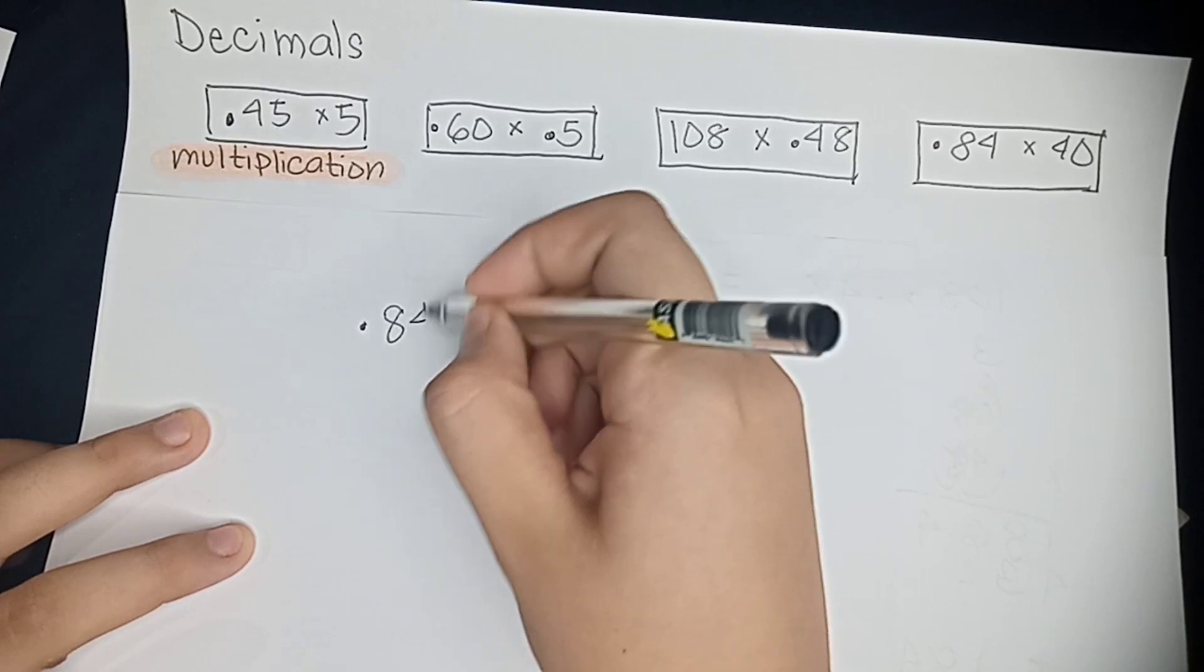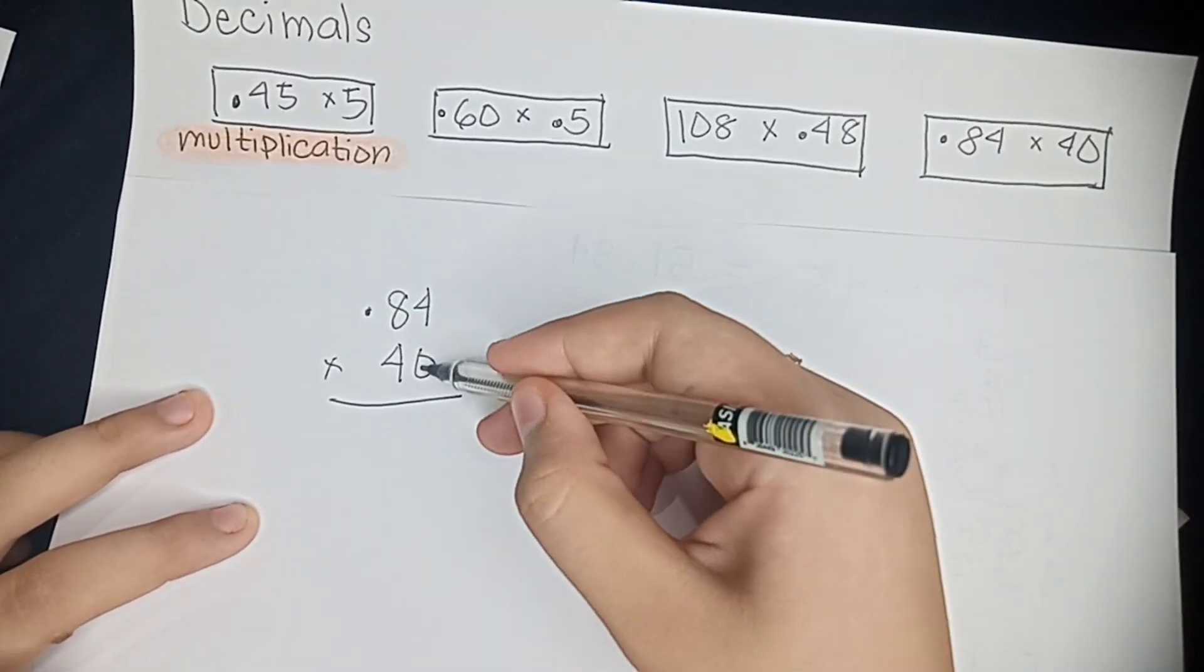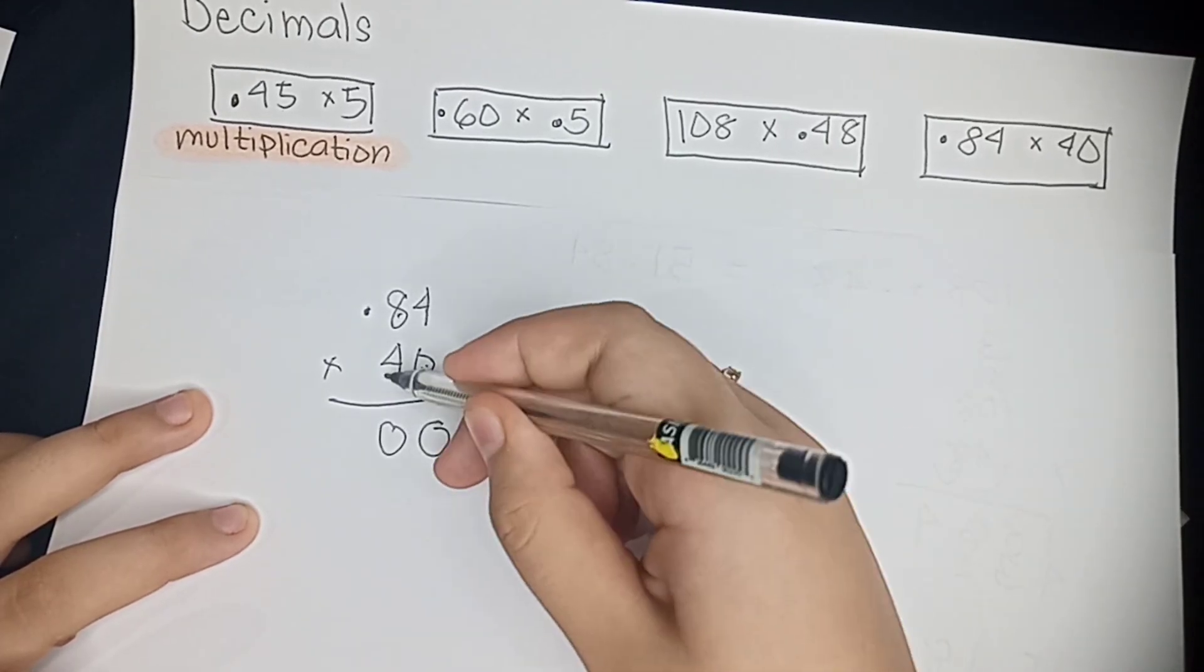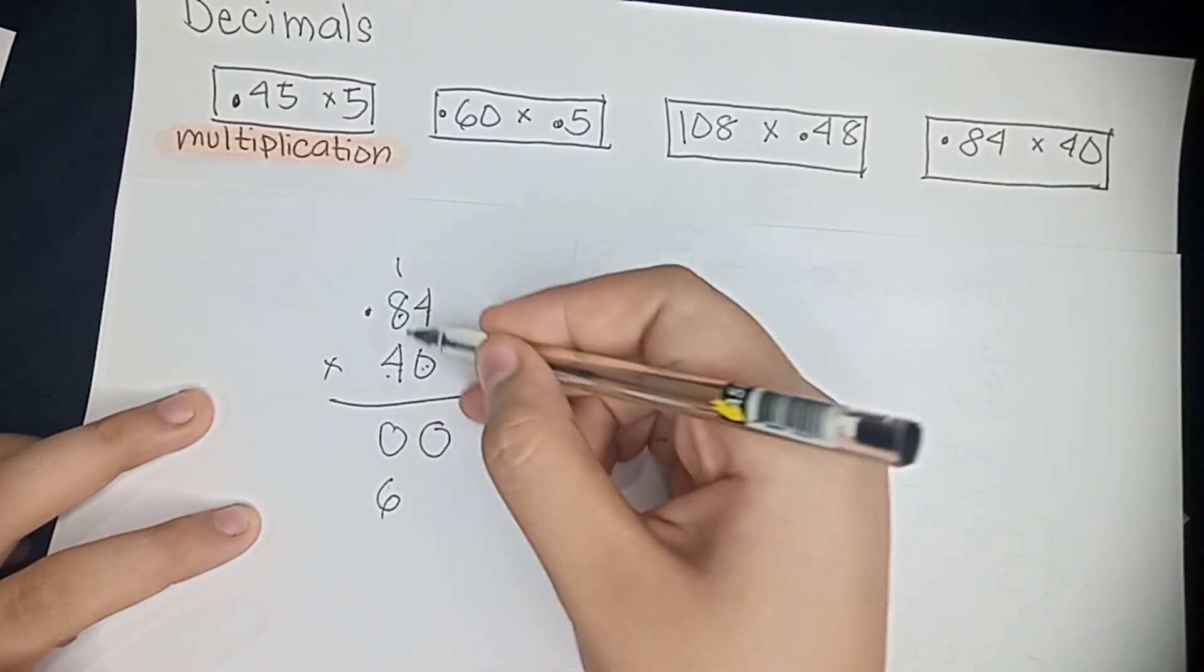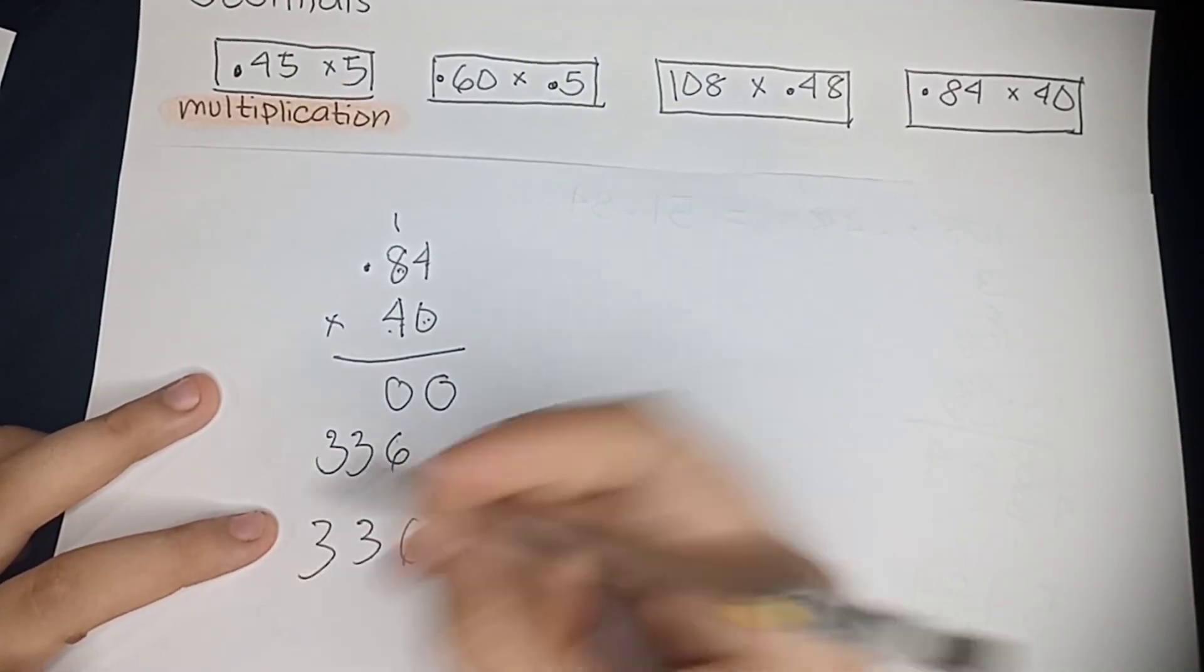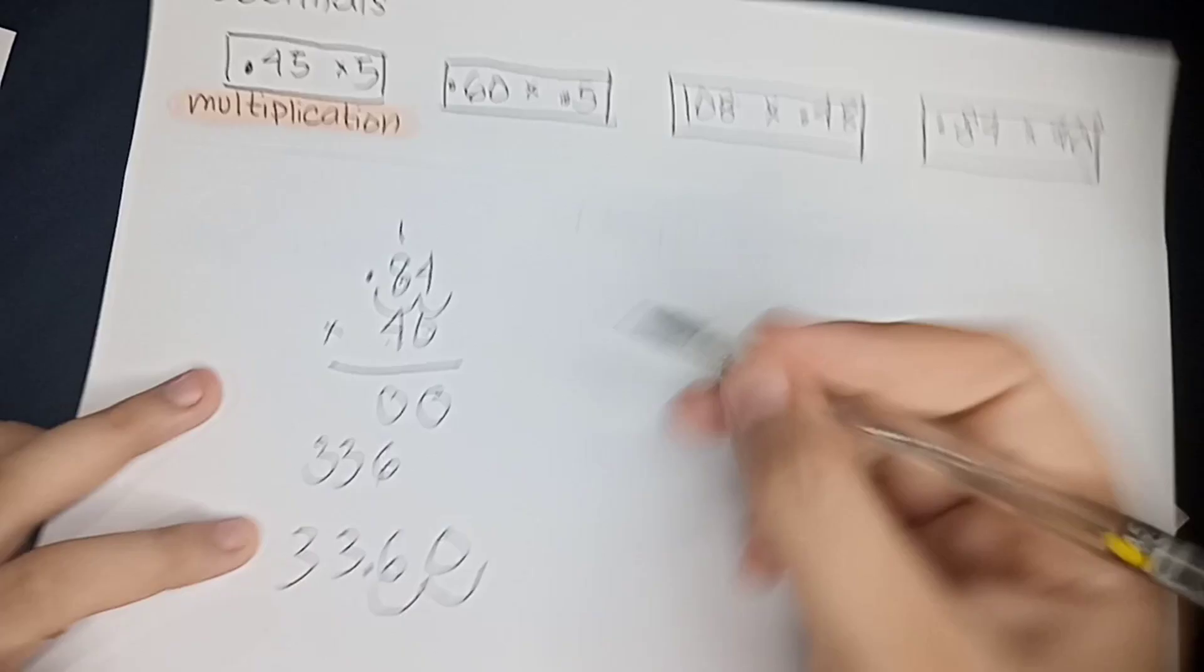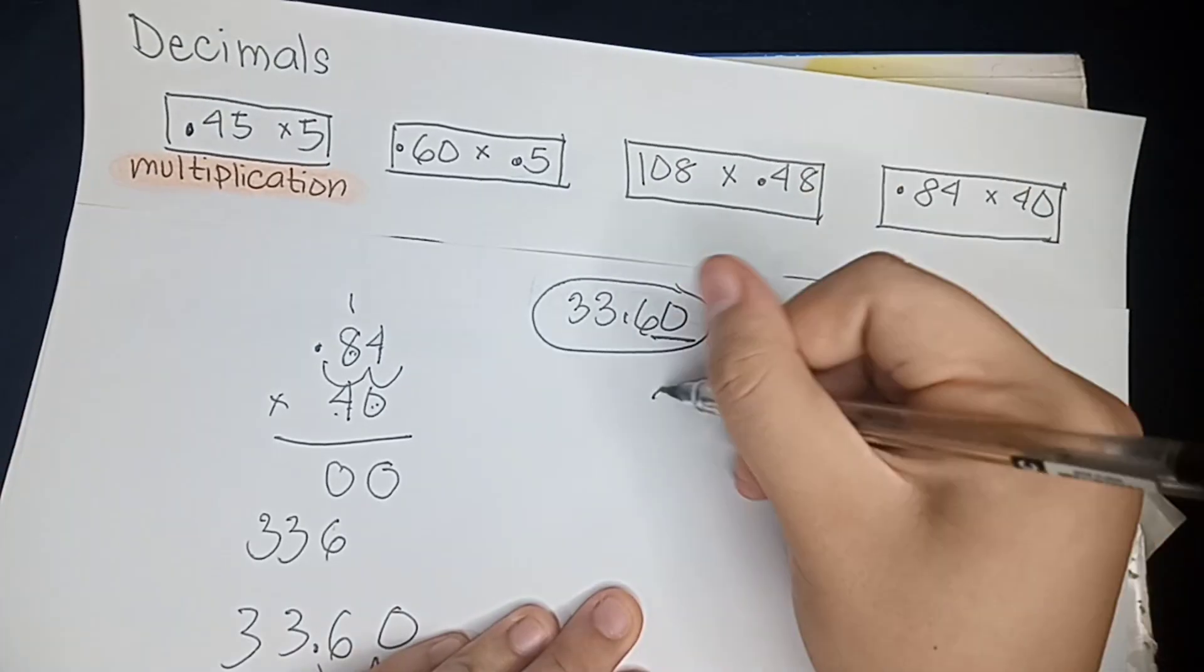So now we're going to move on to 0.84 multiplied by 40. 0 multiplied by 4 equals 0. 0 multiplied by 8 equals 0. 4 multiplied by 4 equals 16, carry 1. 4 multiplied by 8 equals 32, plus 1 equals 33. We're going to sum that up together, and now we're going to count the decimal points to the right, which our answer to that equals 33.60, or 33.6.